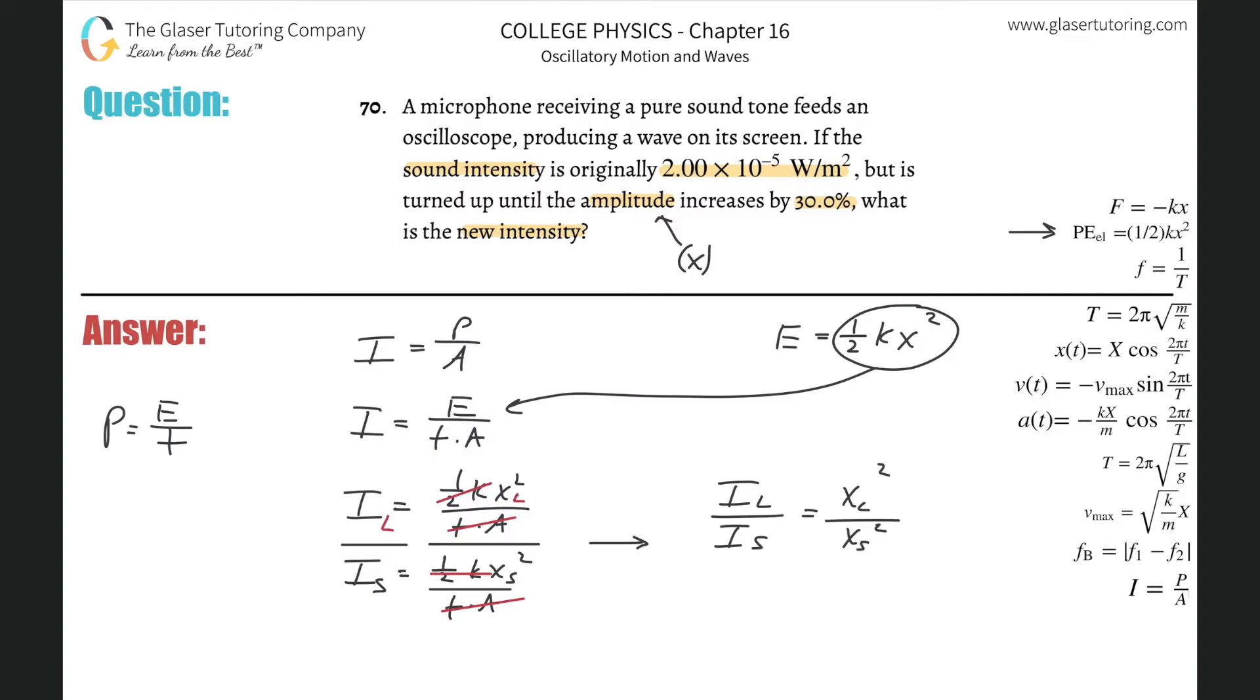What are we trying to find? We're trying to find the new intensity. The new intensity should be the larger one. Why? Because we know that these are directly related. The intensity and amplitude are directly related to one another. So if the amplitude goes up by some percent, then the intensity will also go up by a certain amount.